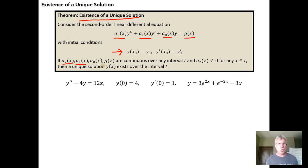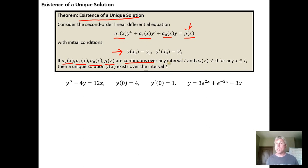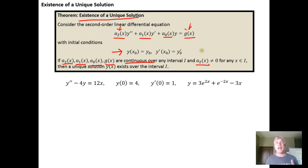If the coefficients a sub 2, a sub 1, and a naught, and the function g are continuous over some interval — any interval that you can find, it doesn't matter the interval — so as long as your coefficients and g of x are continuous with no discontinuities in those functions, and as long as a sub 2, that leading coefficient, isn't equal to zero on the interval i, then you're guaranteed that the initial value problem has a solution, and that that solution is unique — in other words, it's the only solution.